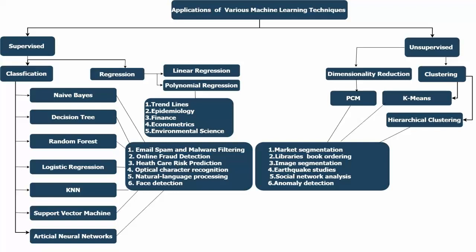These are some algorithms for classification: Naive Bayes, decision tree, random forest, logistic regression, ANN, and support vector machines.